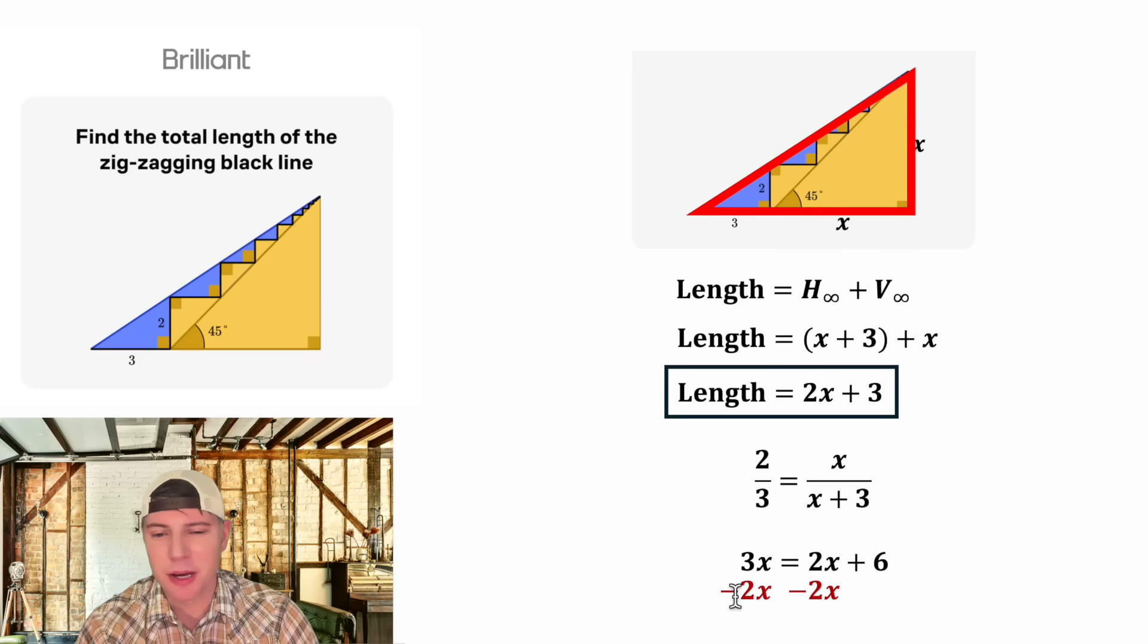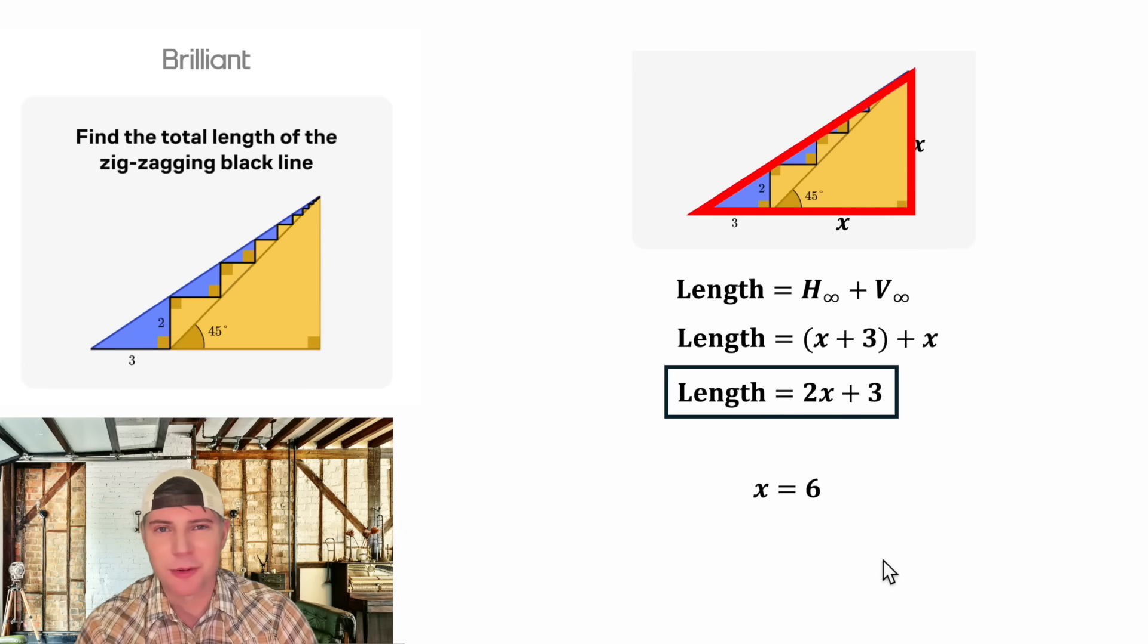On the left hand side three x minus two x is x. And on the right hand side these two two x's cancel each other out. So we end up with x is equal to six.